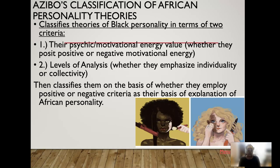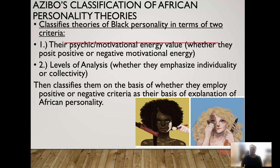In their analysis of African personality they wanted to understand who African Americans are and where their personality was rooted in. It comes out of the individual theorist's own perspective — some came from a more Eurocentric perspective, whether African-American or European, or they came from a more Afrocentric perspective. Azibo classified them on the basis of whether they employed a positive or negative criteria as their basis of explanation of the African personality.